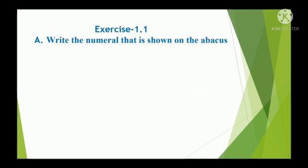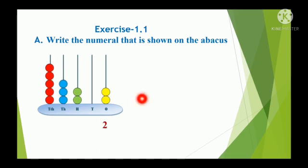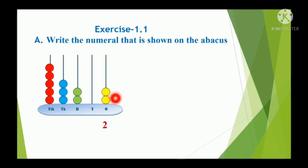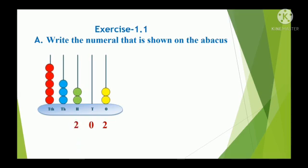Let us solve Exercise 1.1a: Write the numeral that is shown on the abacus. See here — this is an abacus with colorful beads. In the 1s place, there are 2 beads, so we write 2. In the 10s place, there are no beads, so we write 0. In the 100s place, there are 2 beads, so we write 2.